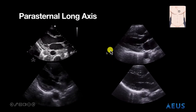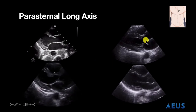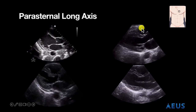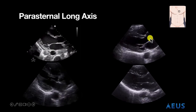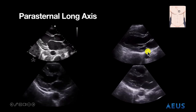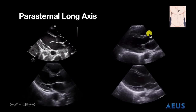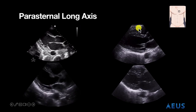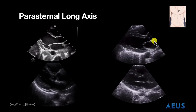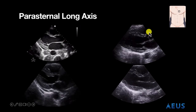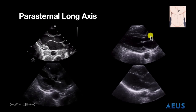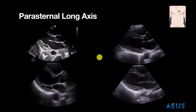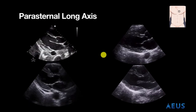We can talk about exit, which would be the aortic root diameter. We always talk about the third, third, third rule, which is essentially the left atrium, the aortic root diameter, and the right ventricular outflow tract should roughly be a third, a third, and a third. Sometimes when we see a large aortic root diameter, that can give us concern for an ascending aneurysm and or dissection.